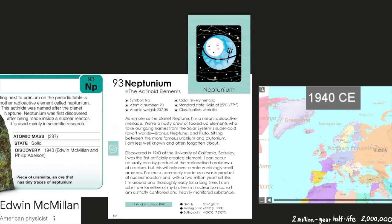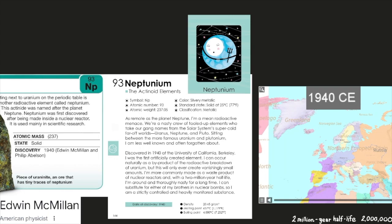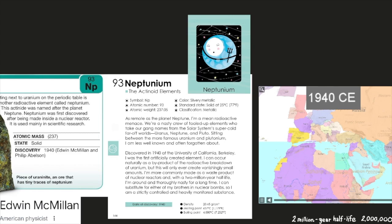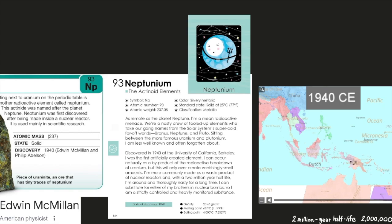I can occur naturally as a byproduct of the radioactive breakdown of uranium, but this will only ever create vanishingly small amounts. I am more commonly made as a waste product of nuclear reactors and, with a 2 million year half-life, I am around and thoroughly nasty for a long time. I can substitute for either of my brothers in nuclear bombs, so I am a strictly controlled and heavily monitored substance.